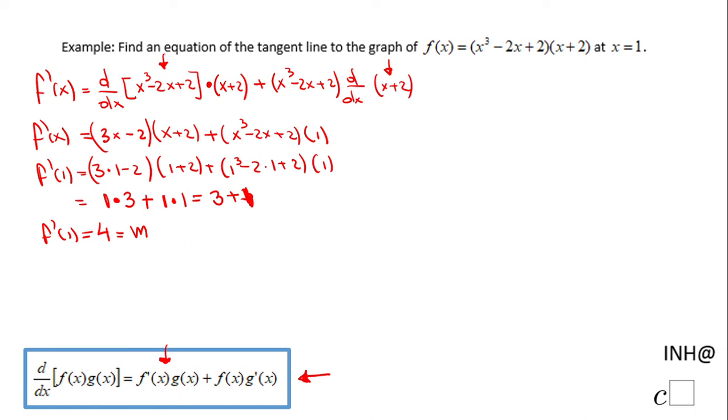So for writing the equation, we need also a point. And since we know x equals 1, I'm going to do f(1) to find the y-coordinate, and that will be, again, I'm going to plug 1 in the f function: 1³ - 2(1) + 2 times (1 + 2).